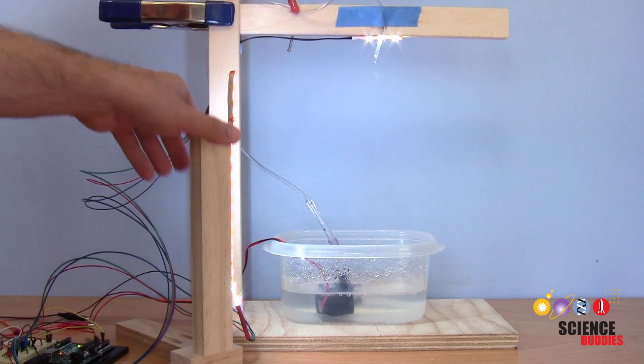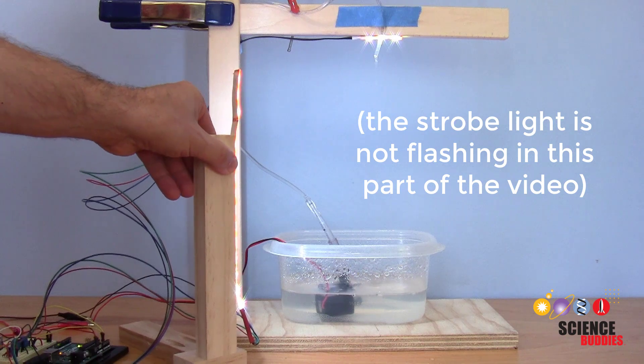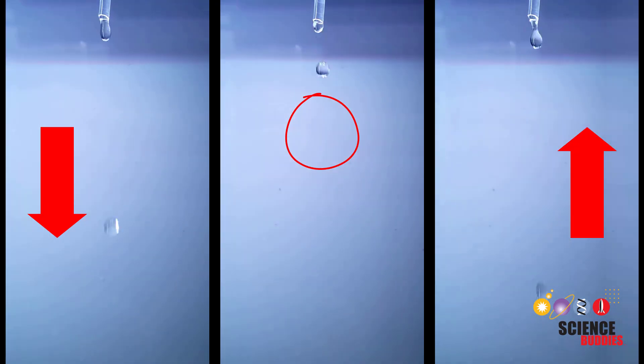It is a fountain with falling drops of water that are illuminated by a strobe light. As you can see in these inset videos, this can create an illusion that the drops are falling very slowly, hovering in midair, or even falling up due to something called the stroboscopic effect.